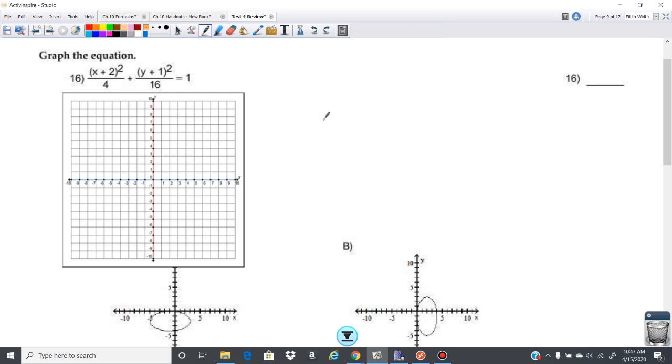We are graphing an ellipse here. I know it's an ellipse because looking at the form, you've got x minus h squared, you've got a denominator, and you've got a plus sign here.